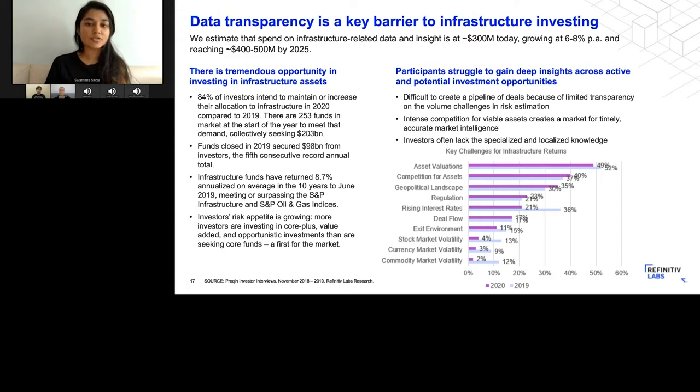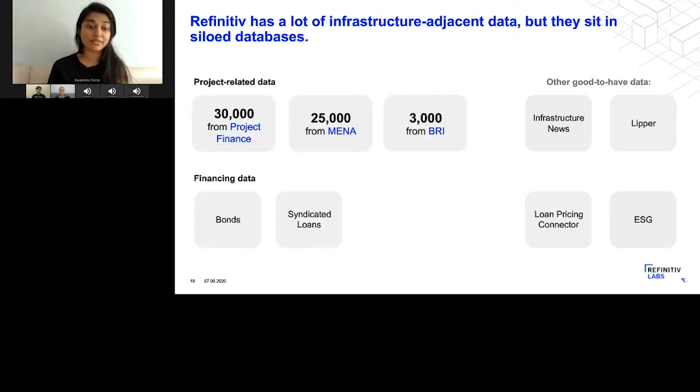As Refinitiv, we didn't have at the time a specific infrastructure proposition, but what we did have was a lot of data that could be applicable to an infrastructure investor—it just needed to be combined together in a useful way. For example, we had project-related data, financing data like bonds and loans that are typically used to finance an infrastructure project, as well as news, other loans data, and ESG data that's essential to assessing the sustainability risk of an infrastructure project.